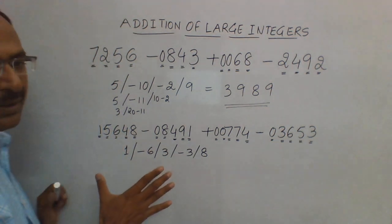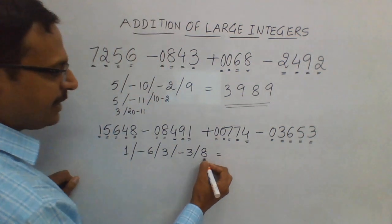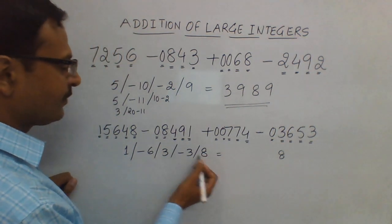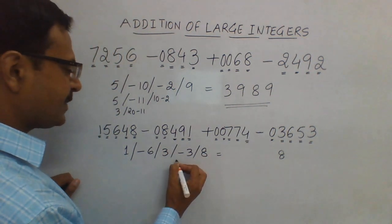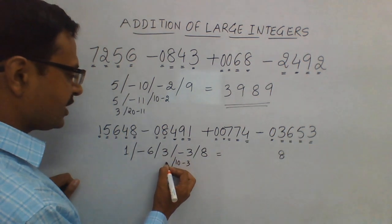Let's apply this to the second one. Here we have 8, which is positive, so we don't need to worry. This is negative, so this becomes 10 minus 3, and I have to carry 1 from here. So this becomes 2.